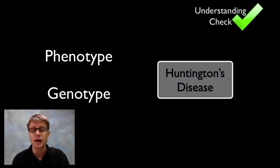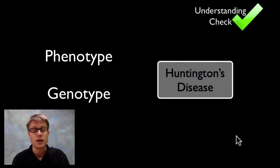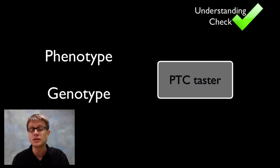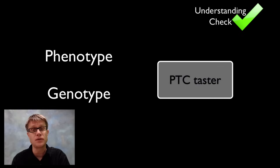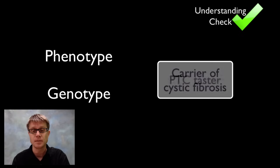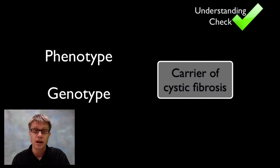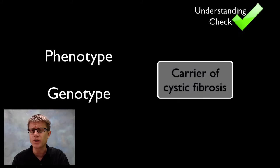Let's say an individual has Huntington's disease. That's right — that should be a phenotype, because it's the physical manifestation of their genes. Now let's say an individual is a carrier of cystic fibrosis. That would be their genotype, because they're carrying one cystic fibrosis gene but we couldn't see that by looking at them — they won't have cystic fibrosis. When solving Hardy-Weinberg problems, it's important to figure out right away whether we're talking about a phenotype or a genotype.